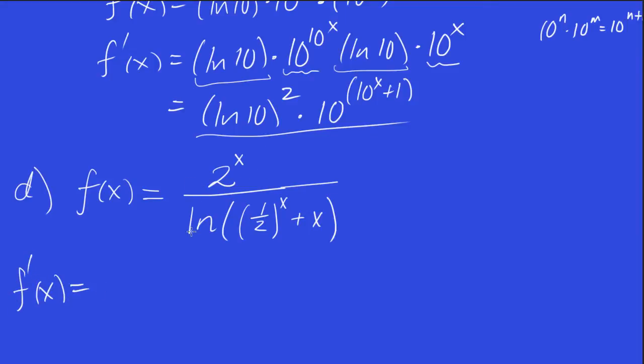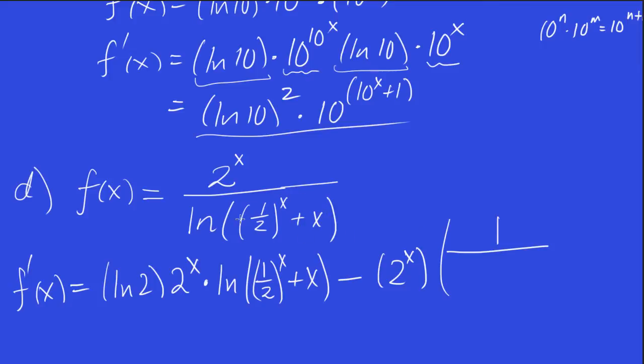The derivative of the numerator is ln 2 times 2 to the x. That's our basic formula. Then we multiply by this left alone. Minus, now we leave this alone. And we multiply by this. It's going to be 1 over all this stuff. I'm using chain rule right now. We know the derivative of ln x is 1 over x. And so, therefore, the derivative of ln of anything is 1 over that thing times the derivative of that thing.